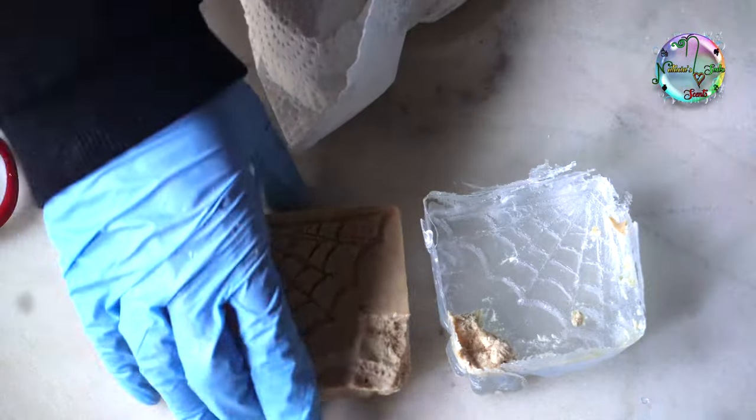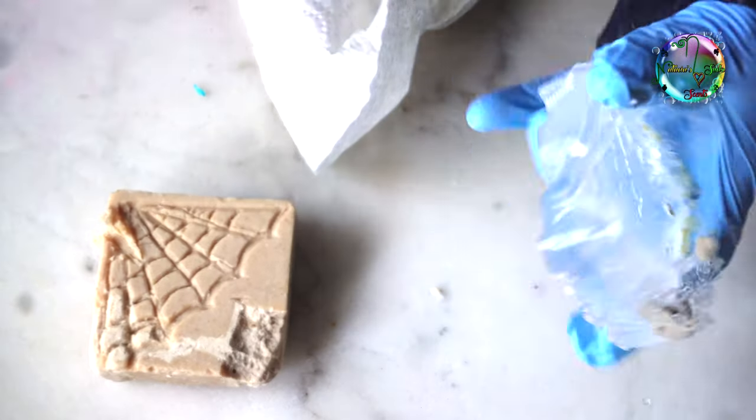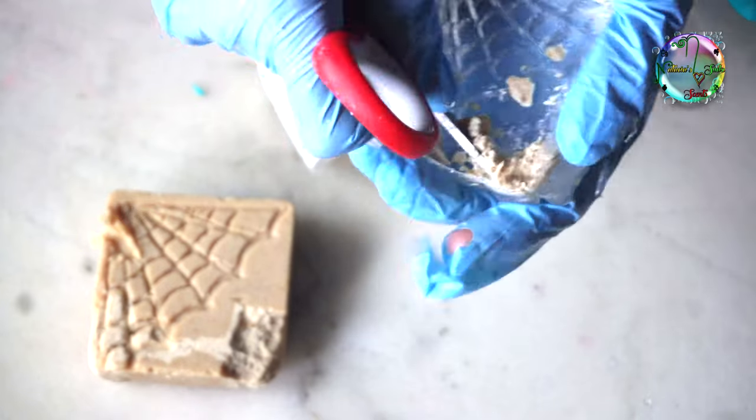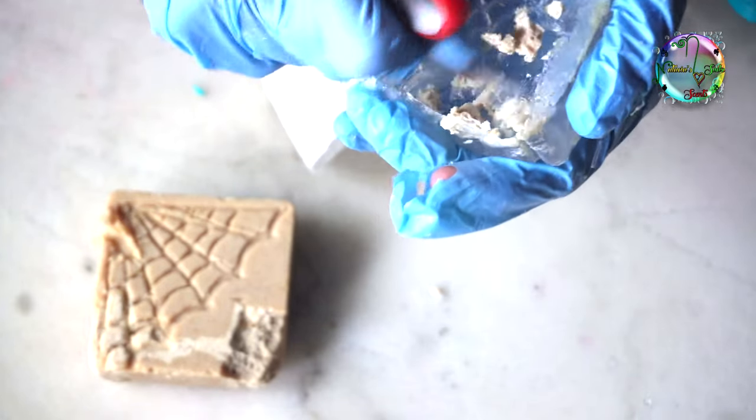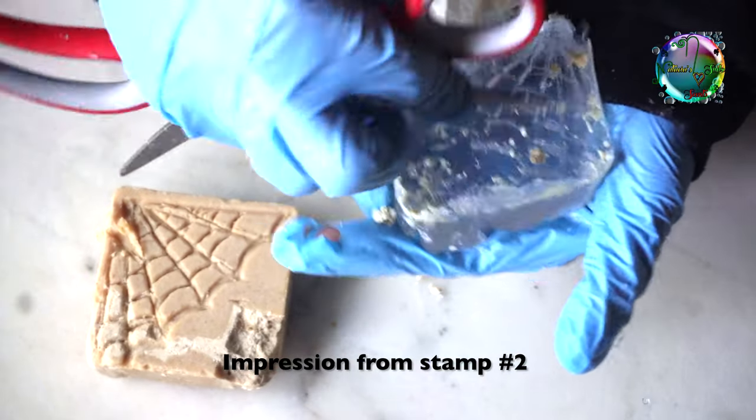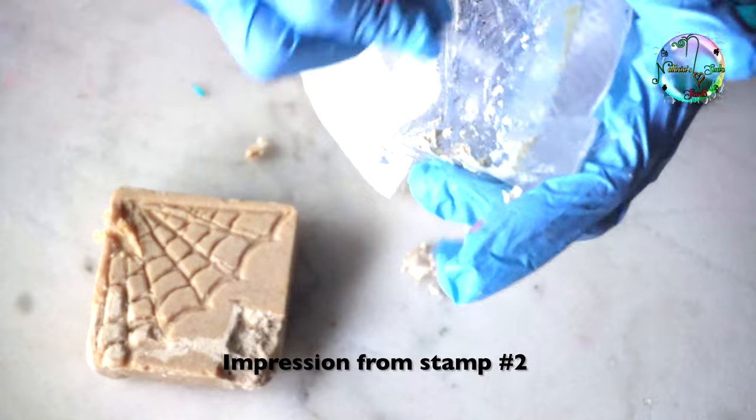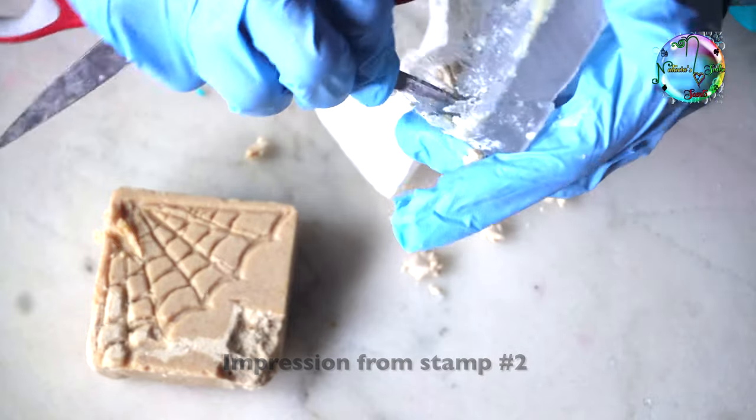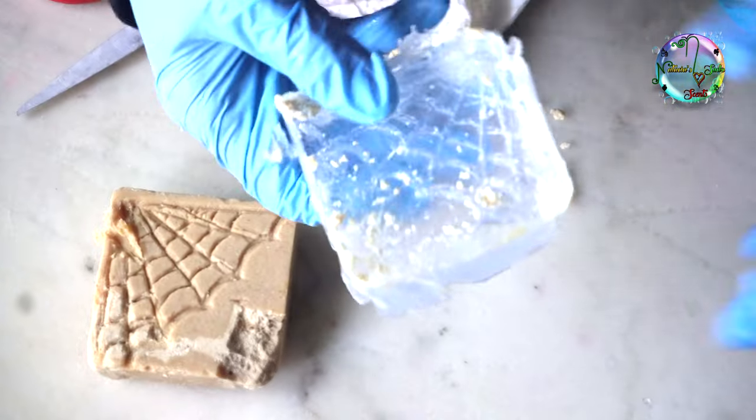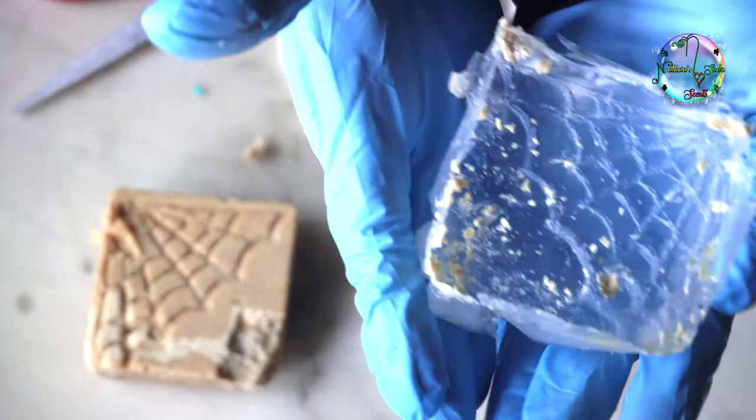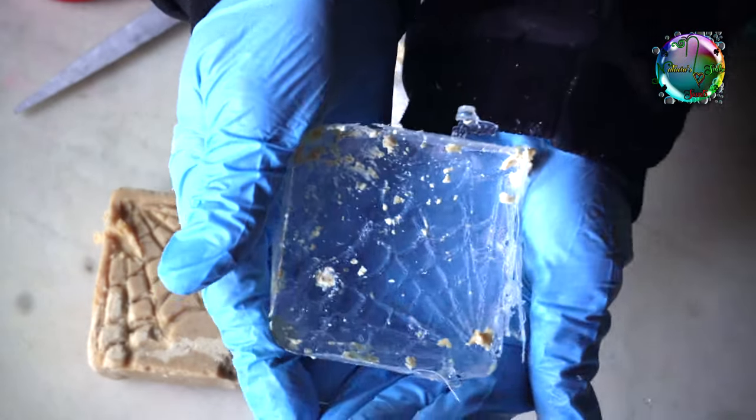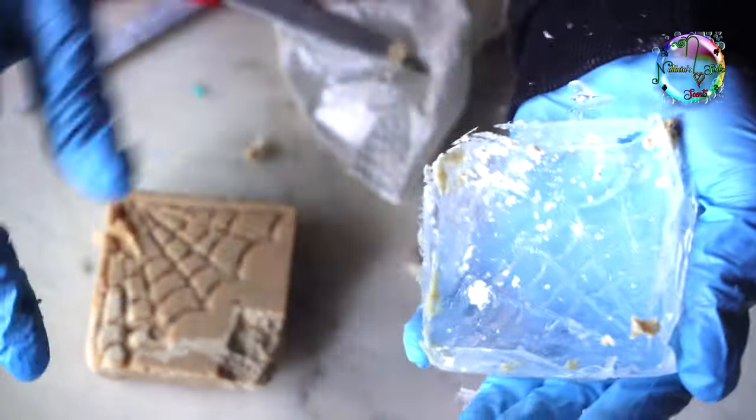What I did not show you guys is that the edge of this resin stamp had an edge to it, and unless the soap fit directly in it, it was going to cause an indentation. So I was in my backyard on my little concrete step trying to grind down the side so that when I stamped the soap, it wouldn't make another indentation. You'll see what I mean when I do one of the stamps.